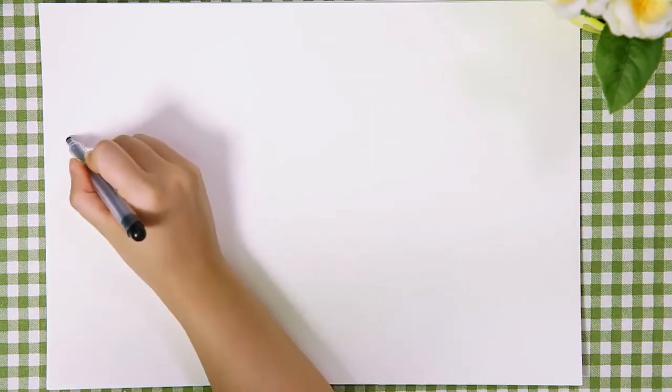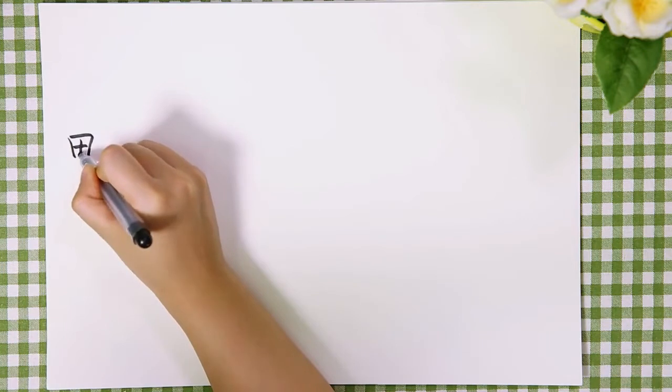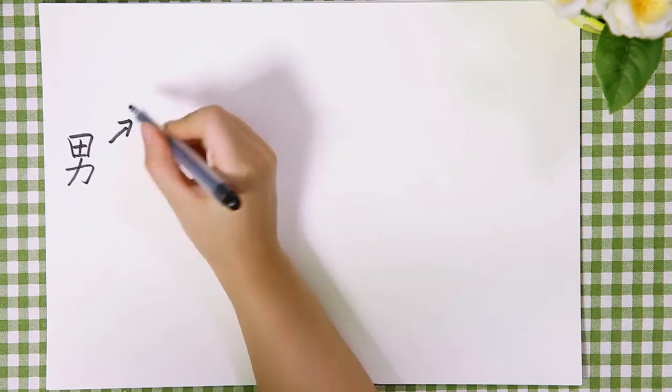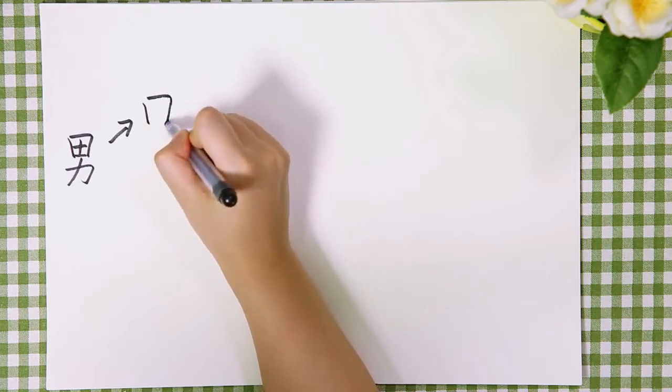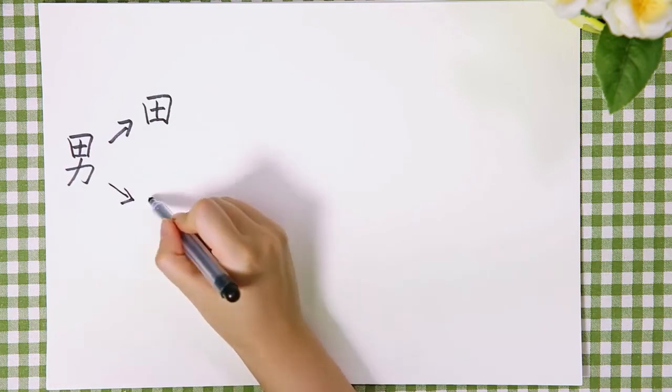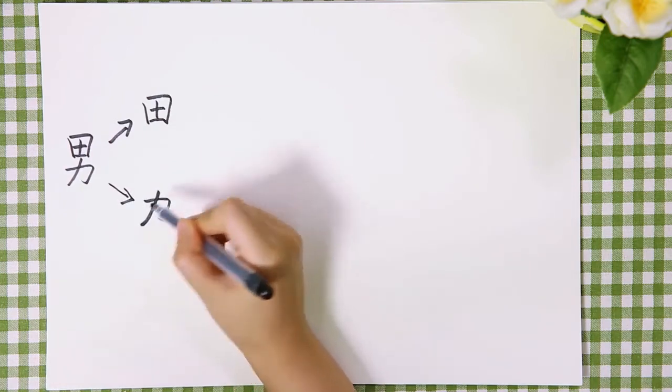Now, let's look at the other character. It consists of two parts. The upper half and the lower half.